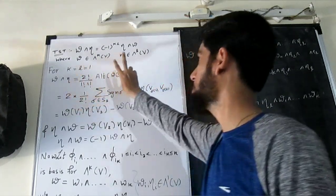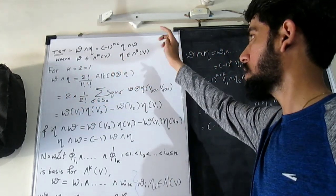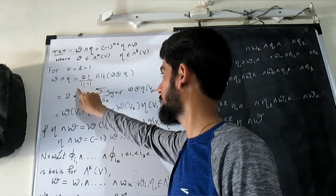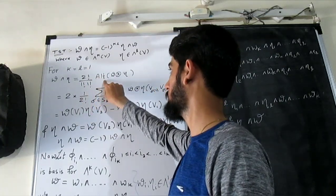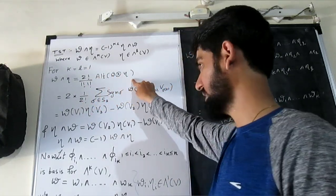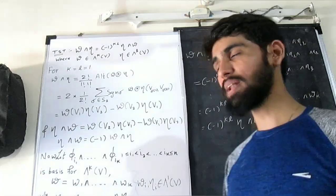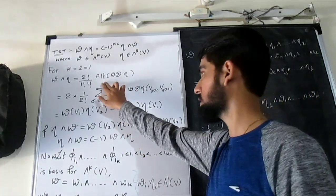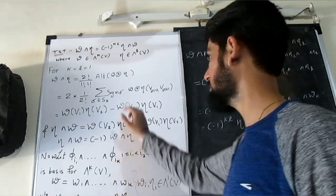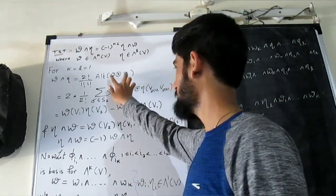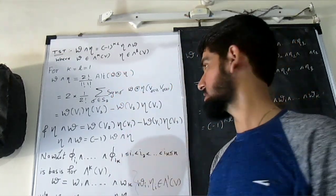So 2 factorial divided by 1 factorial 1 factorial, alt of omega tensor product with eta. Now we also apply the definition of alt. What is the definition of alt? Where does this element belong? This element belongs to the second tensor.